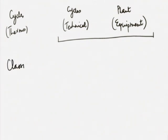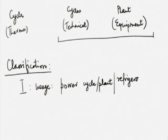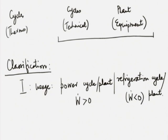When it comes to classification, there are a number of modes. One type of classification is based on usage. The first is whether it is a power cycle — for a power plant — or a refrigeration cycle, for a refrigeration plant. Thermodynamically, power cycles are power-producing cycles and refrigeration cycles are power-consuming cycles. For power cycles, W-dot would be greater than zero; for refrigeration cycles, W-dot would be less than zero. These are sometimes called forward cycles; refrigeration cycles are quite often known as reverse cycles.